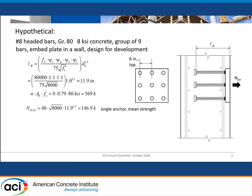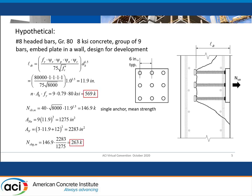Let's look at what this means in terms of a breakout calculation, just assuming for the moment that this could actually generate a breakout. I'm going to use a mean predictor here for the breakout value with a K of 40 instead of the K of 24 that you see in the code. Using that roughly 12 inches of embedment, I get for a single bar about 147 kips. If I apply the group factors — just the very basic A_N over A_N0 — I get a total capacity corresponding to a breakout of 263 kips. Now you can argue that's an under-prediction because there's reinforcing in that section and it's going to help — maybe — but the point is that's a big gulf: 569 to 263.